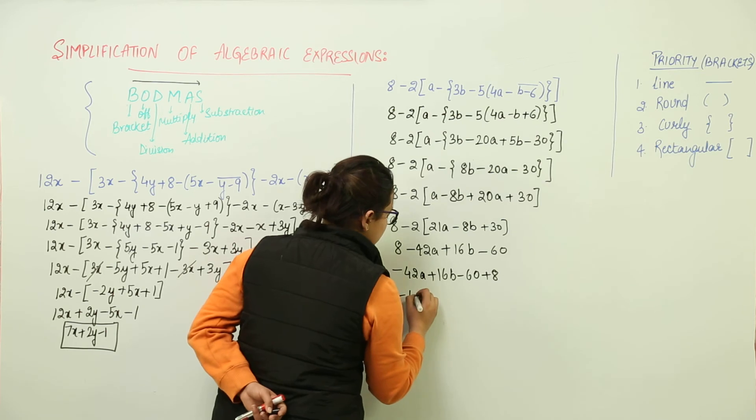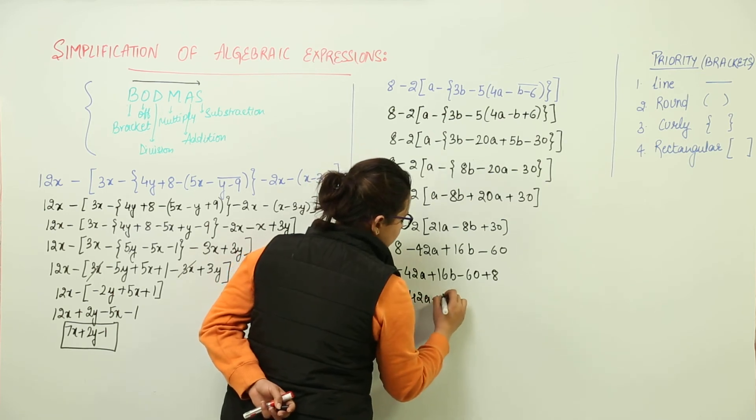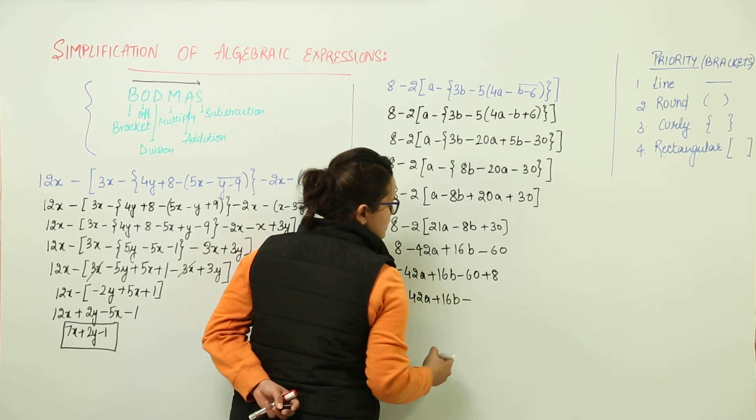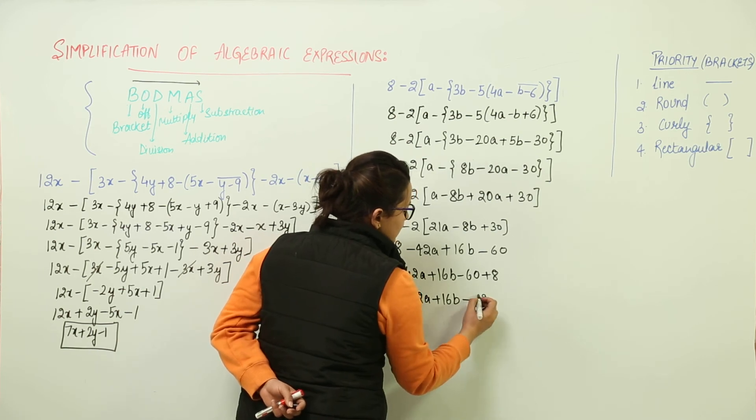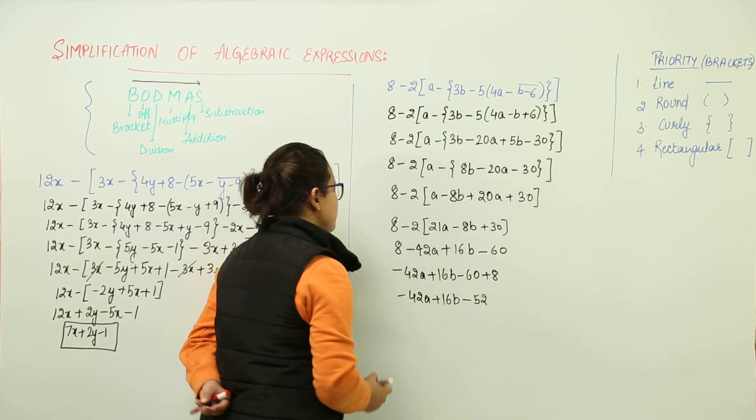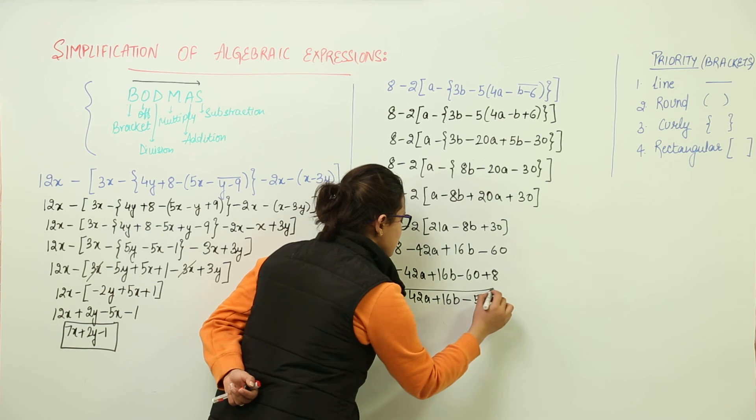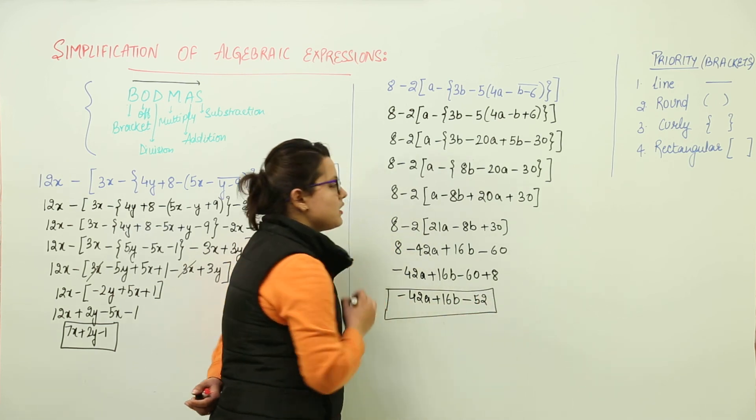So once you subtract you would get minus 42a plus 16b minus. This would give you 2 and 5. That is minus 52. So this remains the answer for this simplification.